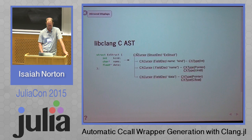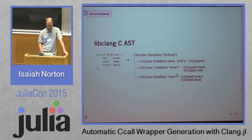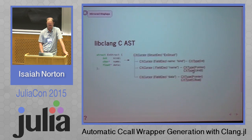Each cursor has children generally, and those children have their own type, and they also have an associated what's called a CXType. So each cursor in this case is a field declaration — a declaration of a field of a struct — and those field decls have names associated with them: kind, name, and data. The associated CXTypes wrap the type of the field and can be walked recursively. For example, the char star and float star fields are at the top level pointer types, but they have a sub-CXType which is translated to the Julia UInt8 type for char star, and likewise the pointer to float is translated as well.